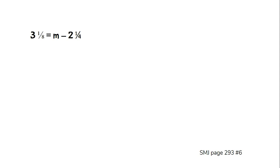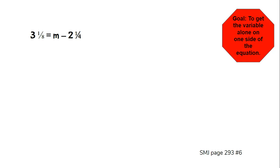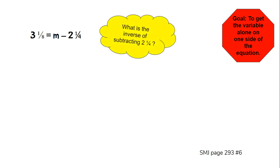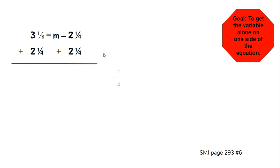Let's take a look at number 6: 3 and 1 eighth = m − 2 and 1 fourth. Remember, the goal is to get the variable alone on one side. We need to get rid of the minus 2 and 1 fourth, so the inverse of subtracting 2 and 1 fourth is adding 2 and 1 fourth. Whatever you do to one side, you do to the other. Since 1 fourth equals 2 eighths: 1 eighth plus 2 eighths is 3 eighths, and 2 + 3 equals 5, giving us 5 and 3 eighths. On the right side, subtracting and adding 2 and 1 fourth cancel out, leaving just m.